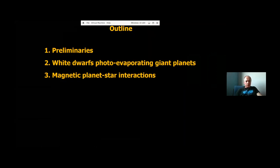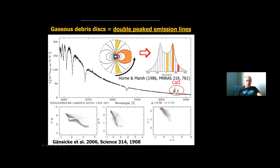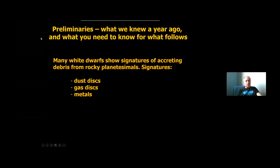So brief outline, I will go through some preliminaries just to get you up to speed with some aspects that you need to know. And then I will go into white dwarfs as being probably the best stars at photo evaporating giant planets. And then briefly talk about some exciting new stuff, which is magnetic planet-star interactions in the white dwarf regime. So the preliminaries is stuff that you've probably heard a couple of times before. I talked about that last year at KITP.